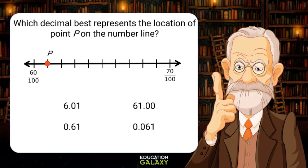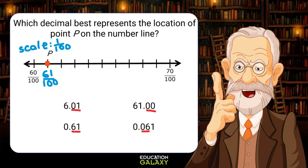Which decimal best represents the location of point P on the number line? Well, since our number line goes from 60 hundredths to 70 hundredths, spanning 10 values, that would mean that our scale is 1 one-hundredth, making our point 61 hundredths. Now that I have the fraction, I need the decimal. Which answer choice is read 61 hundredths? That would be the number 61 ending in the hundredths place. That would be this answer!